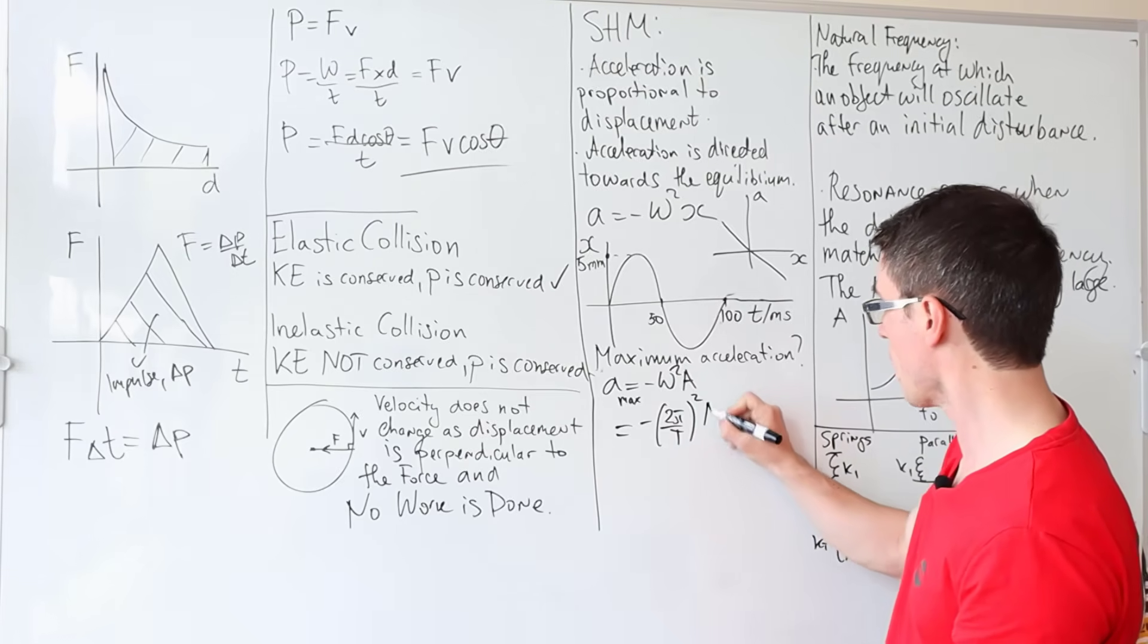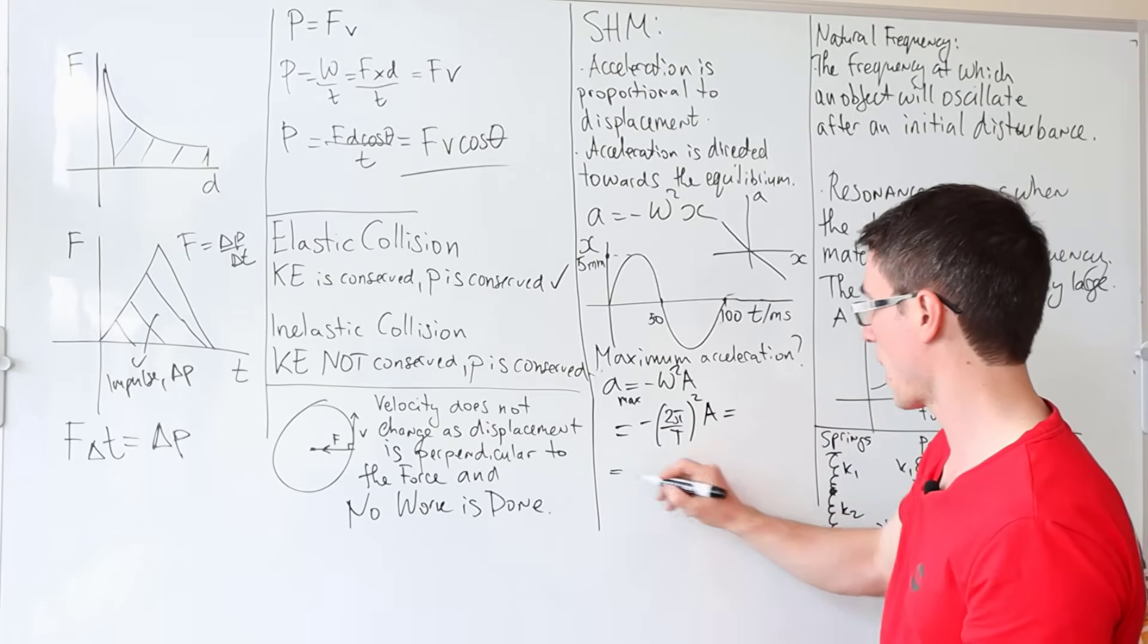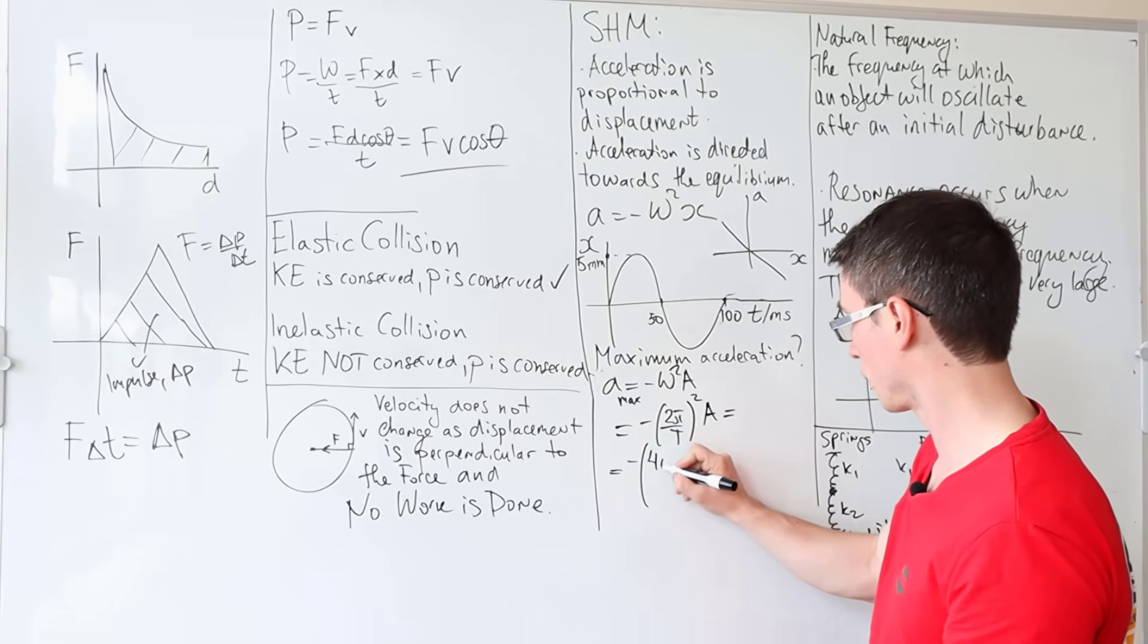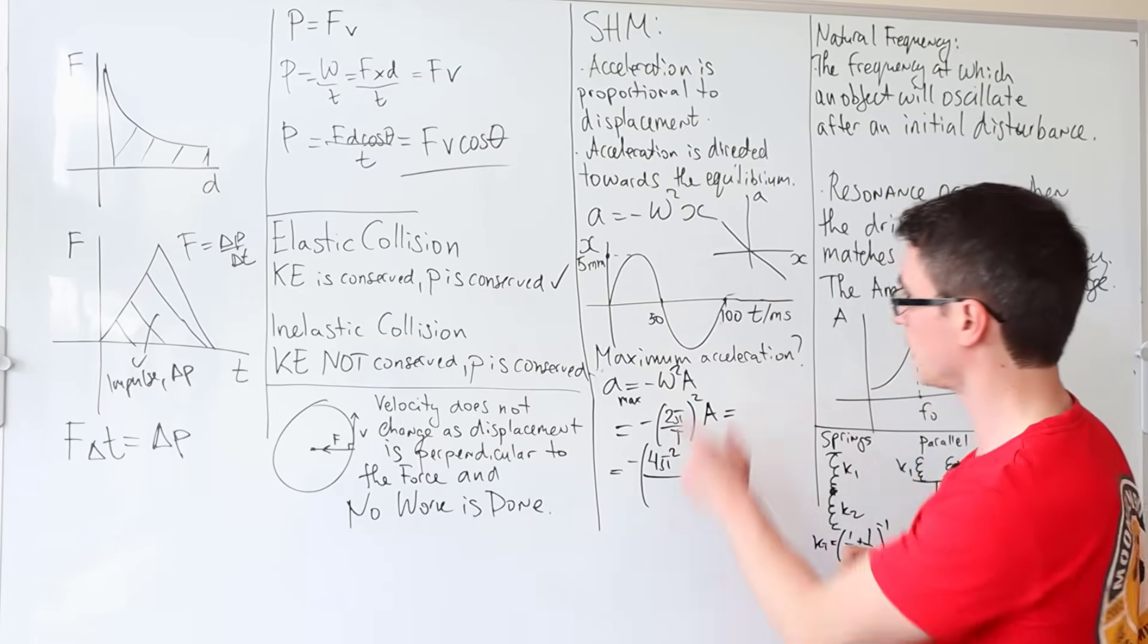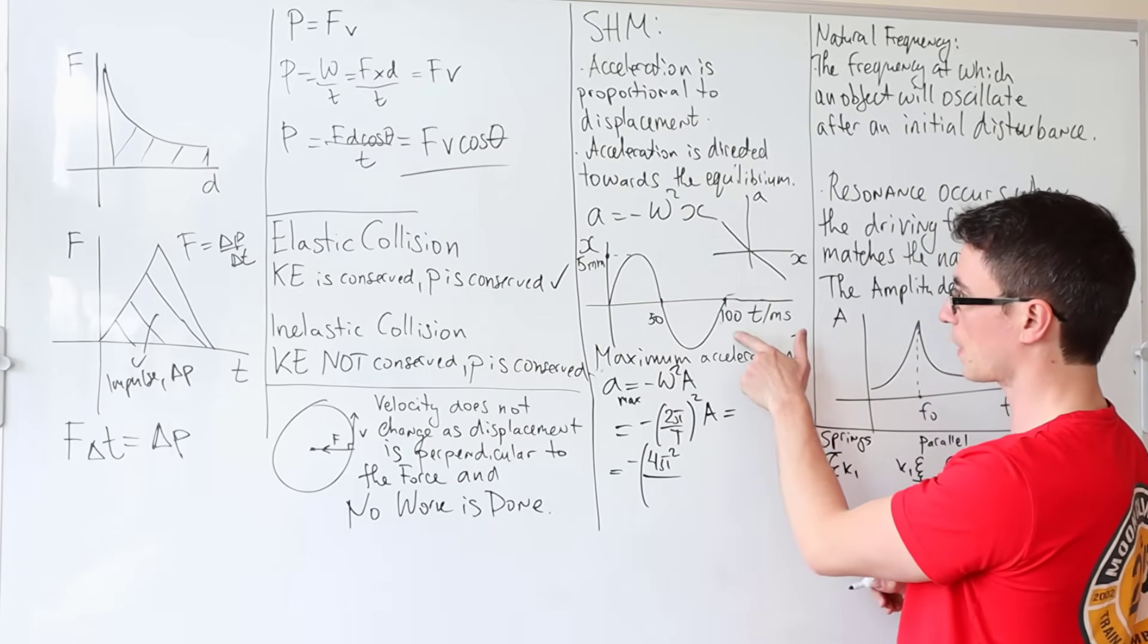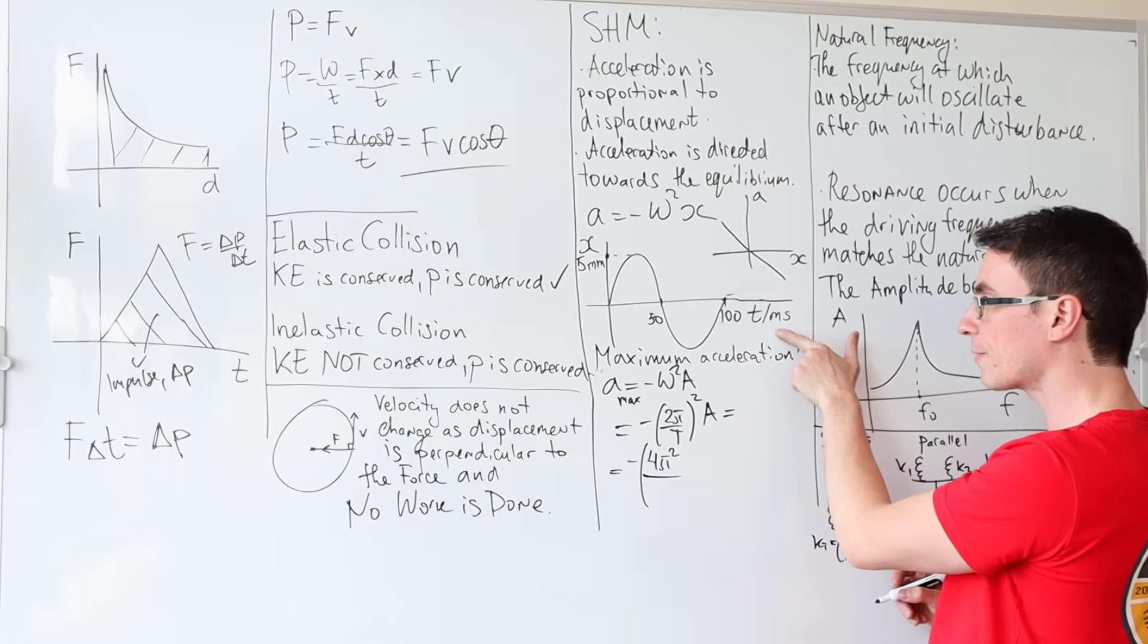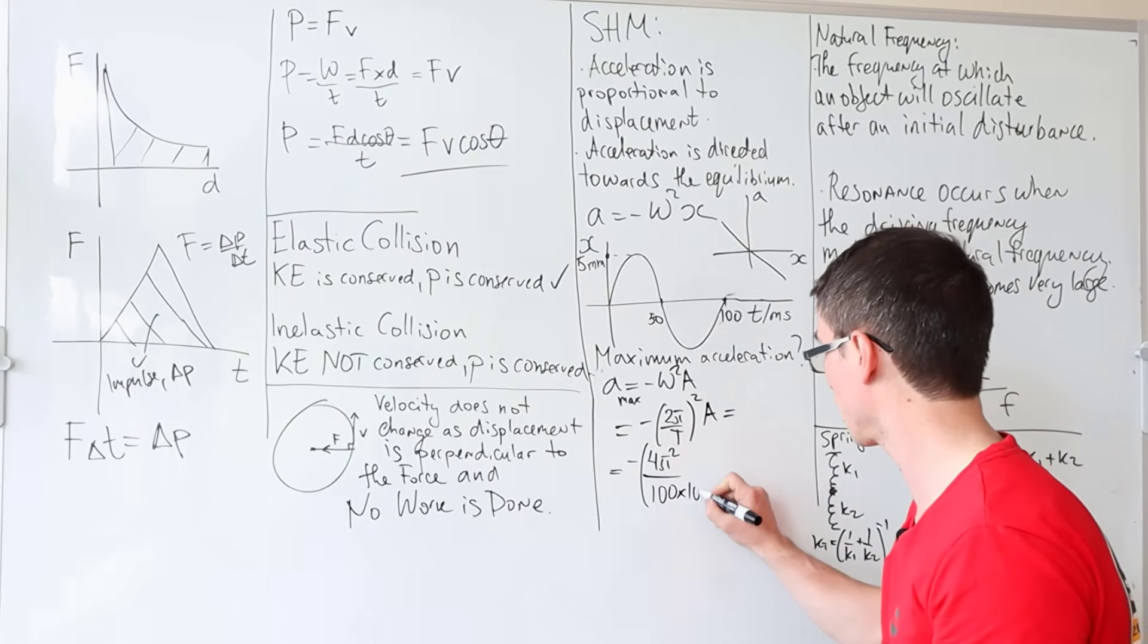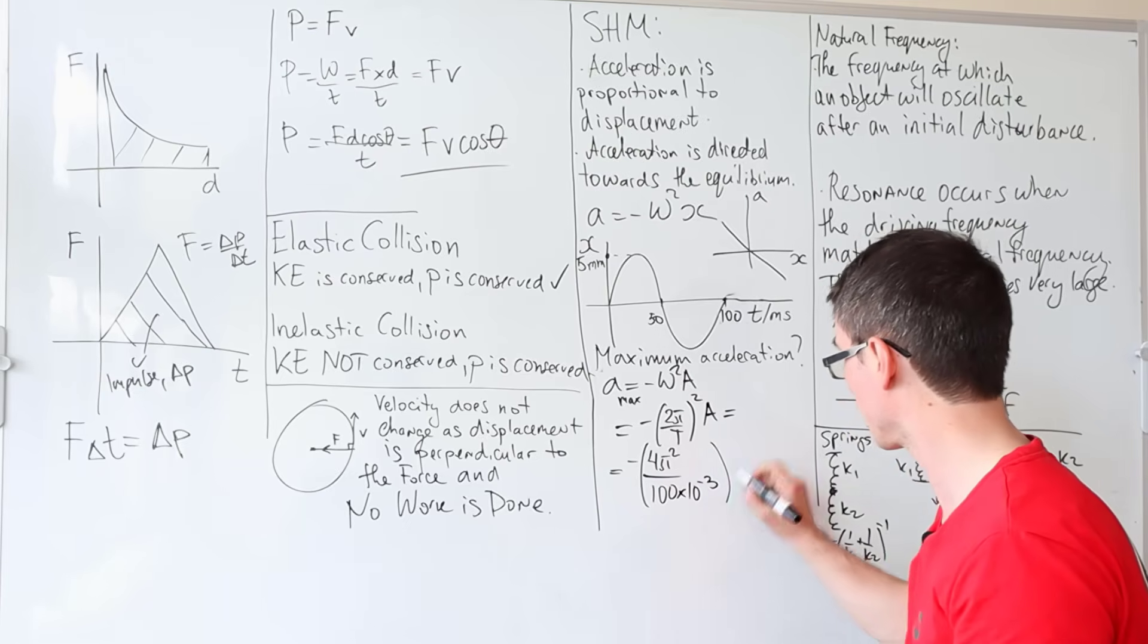Don't forget the square. Multiply by the amplitude, which gives 4π². The time period in this case is 100. Unit check: they've given us milliseconds.